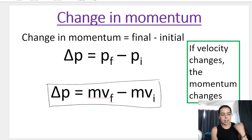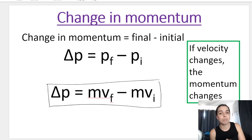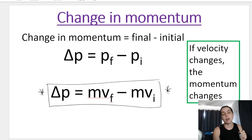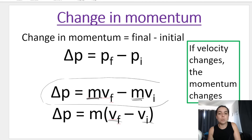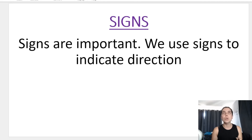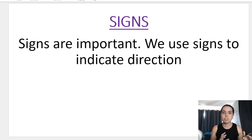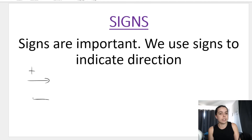As a matric teacher who sets and marks matric exams, the rule is: you must write the formula exactly as it appears on your formula sheet. It's given as Δp = mvf − mvi, so write it in that form first. You can take mass out as a common factor in the next step if you want, but write the formula sheet version first. When working out change in momentum, your signs are extremely important — in physics, signs indicate direction. Which way you choose as positive is up to you, but you must state it and stick with it throughout the question.